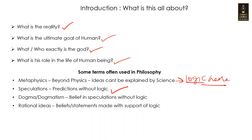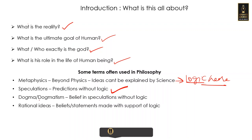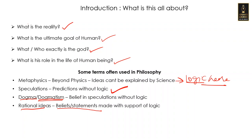The next word is 'dogma'. If people start believing speculations although they cannot explain them logically or rationally, those people are called dogmatic, and such ideas are called dogmas. So any statement made without a logical base is a speculation; if somebody believes that speculation without being able to prove it with logic, they are dogmatic. This belief is called dogma and the phenomenon is called dogmatism. Before believing any statement, if you follow logic and test the idea, you are called a rational person.